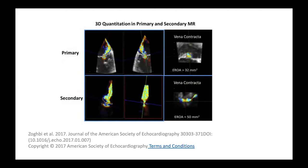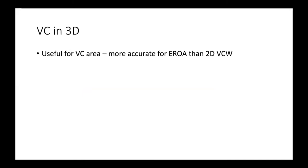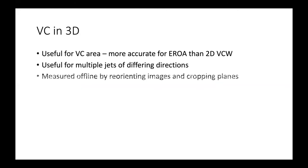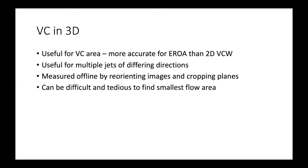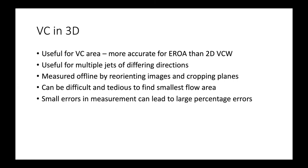In a recent study, 3D vena contracta area greater than 0.4 cm² denoted severe MR. However, studies relating 3D VCA to outcomes haven't been performed yet. Some points on 3D echo: it's useful for VC area and more accurate for EROA than 2D vena contracta width. It's useful for multiple jets of differing directions, which is a limitation of 2D VCW. But it has to be measured offline by rearranging images and cropping planes, and finding the smallest flow area can be difficult and tedious because small errors in measurement can lead to large percentage errors.